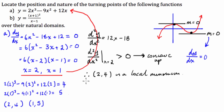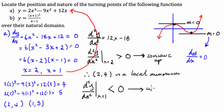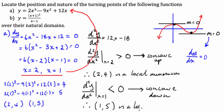We also evaluate the second derivative at x equals 1: 12 times 1 is 12, minus 18 is negative 6 — so the second derivative is less than 0. The function at that point is concave down. If the function has a derivative of 0 and a second derivative that is negative, the point in question is a local maximum. Therefore (1, 5) is a local maximum.